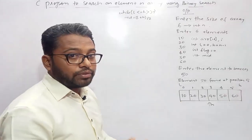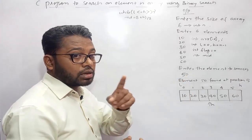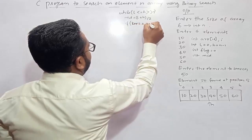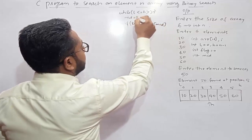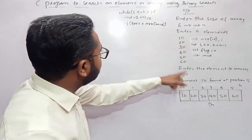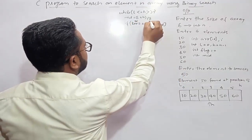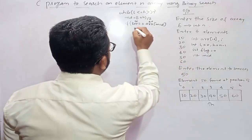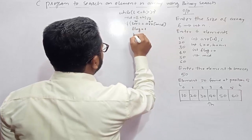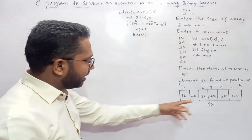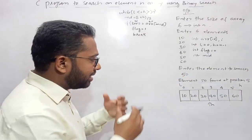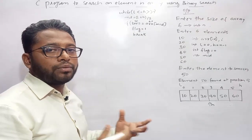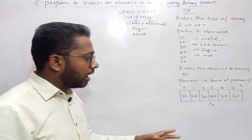Now we check if the key item — say 50 — equals the middle element: if key equals array[mid]. Mid is 2 and array[mid] is 40, and our key is 50. If this condition is satisfied (if the item at the middle location matches what we are searching), we set flag equals to 1 and then break, because we have found the item and there is no need to search further on either the left or right side of the array.